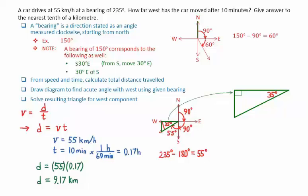Taking a closer look at this triangle, we had calculated the total distance traveled as 9.17 kilometers. We want to figure out the west component, which is x in this diagram. Note that the 35 degrees has x as the adjacent side and 9.17 is the hypotenuse.